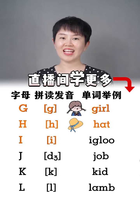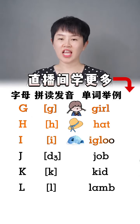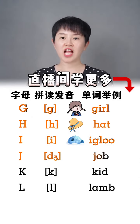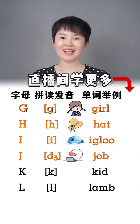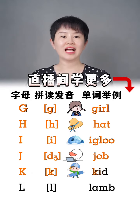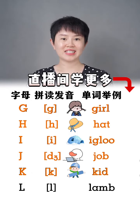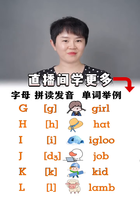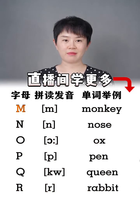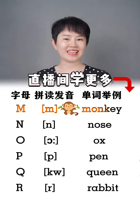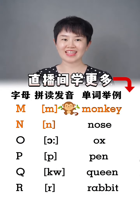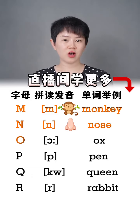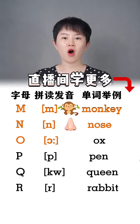i i igloo, j j job, k k kid, l l lamb, m m monkey, n n nose, o aw ox.